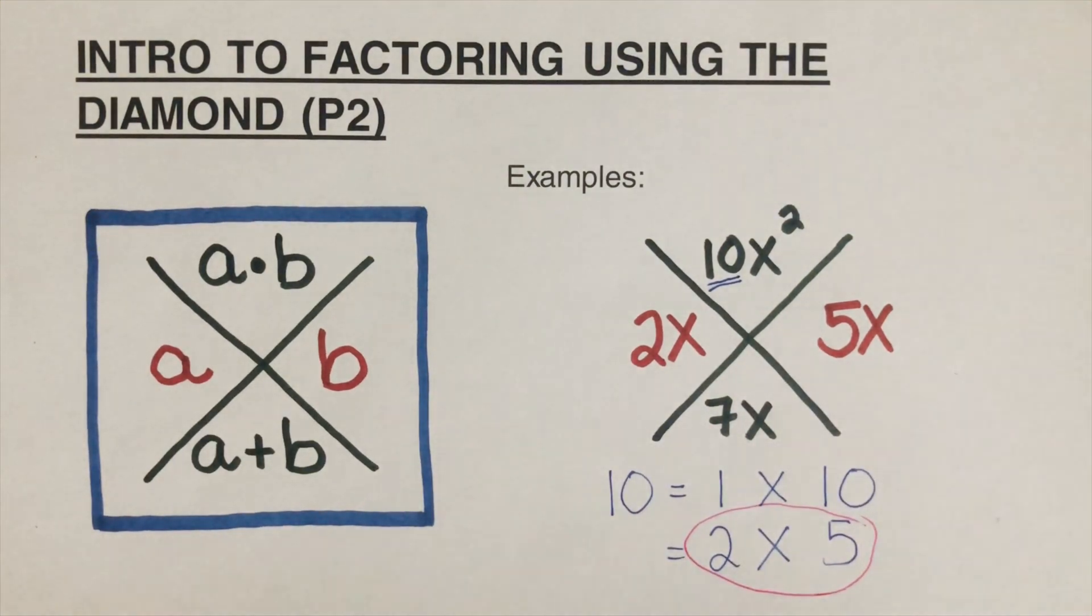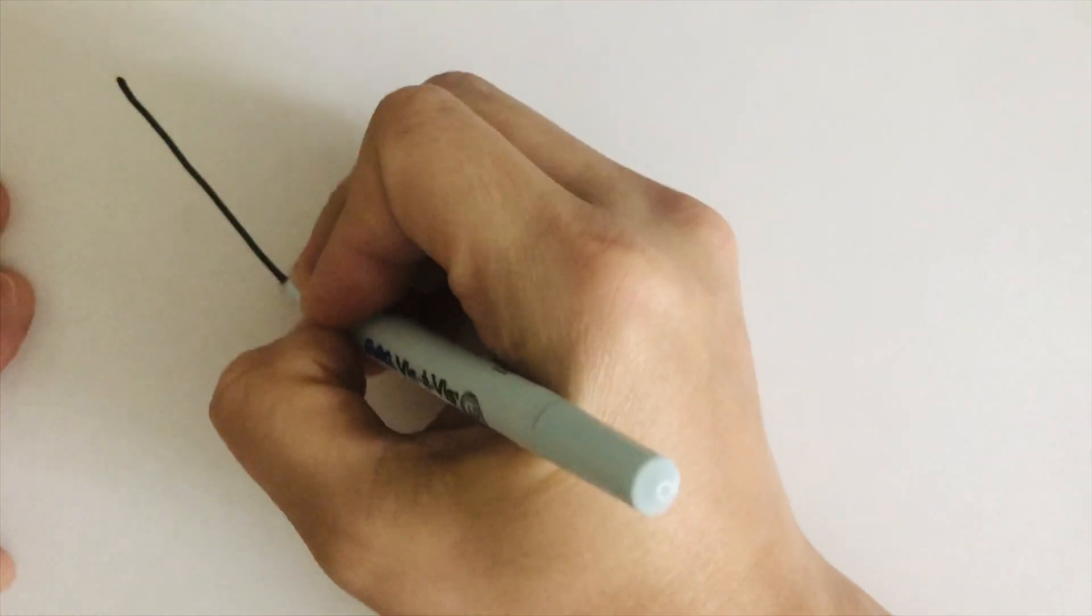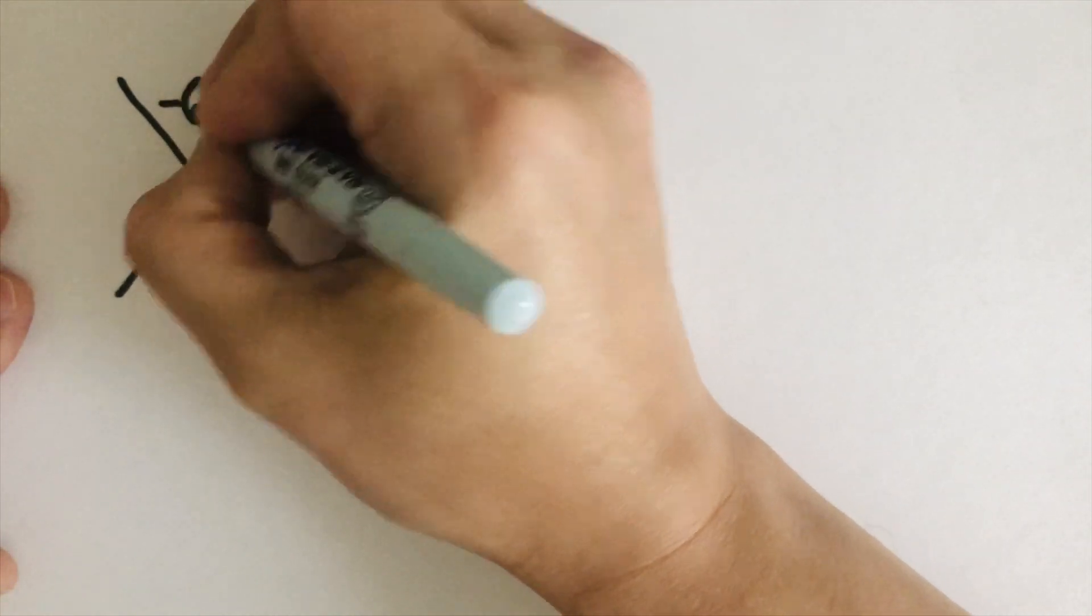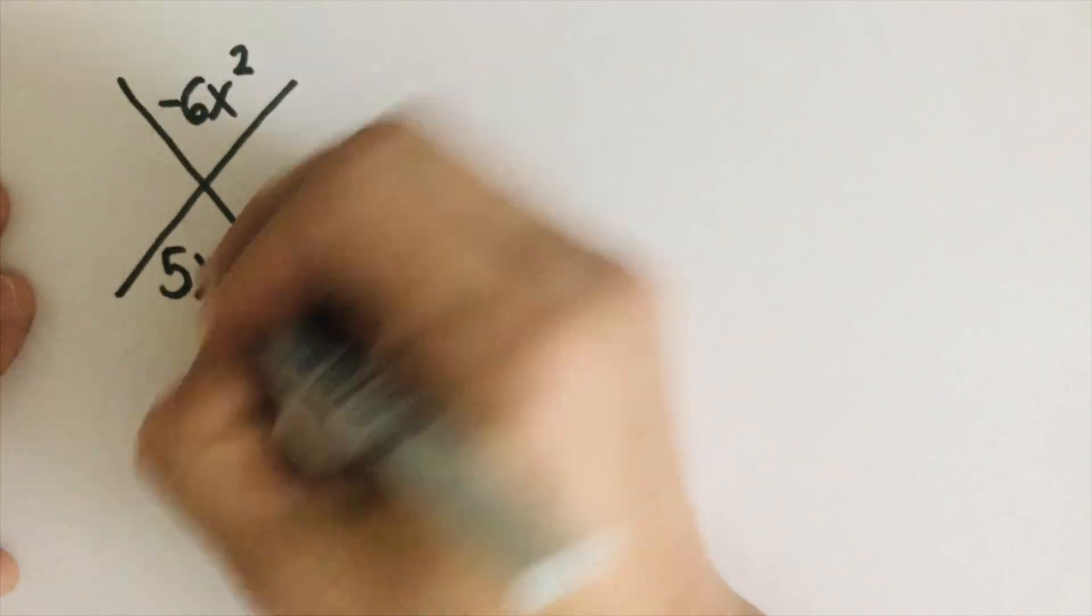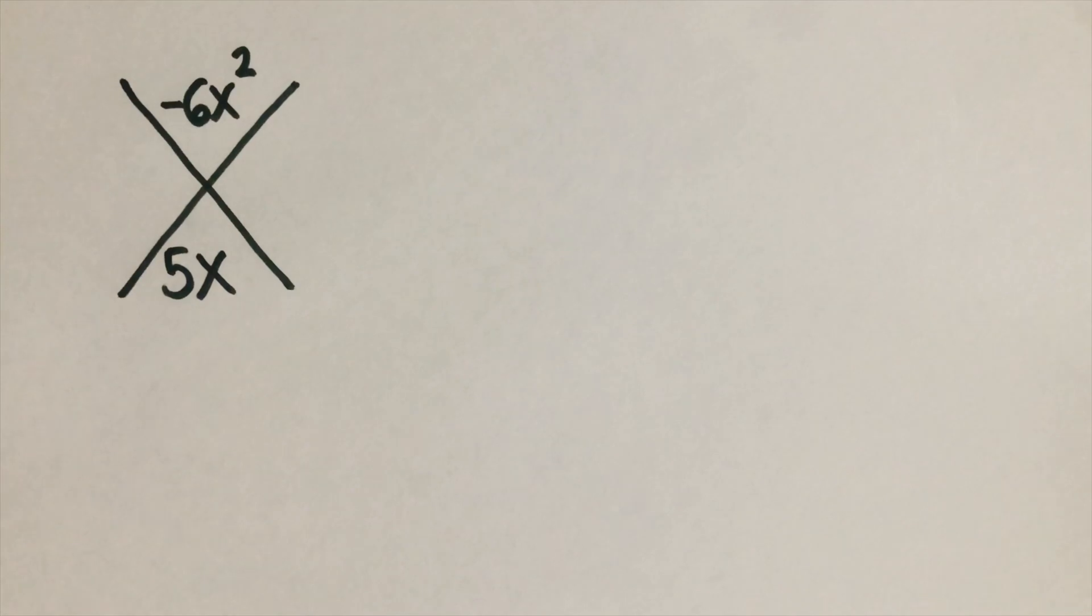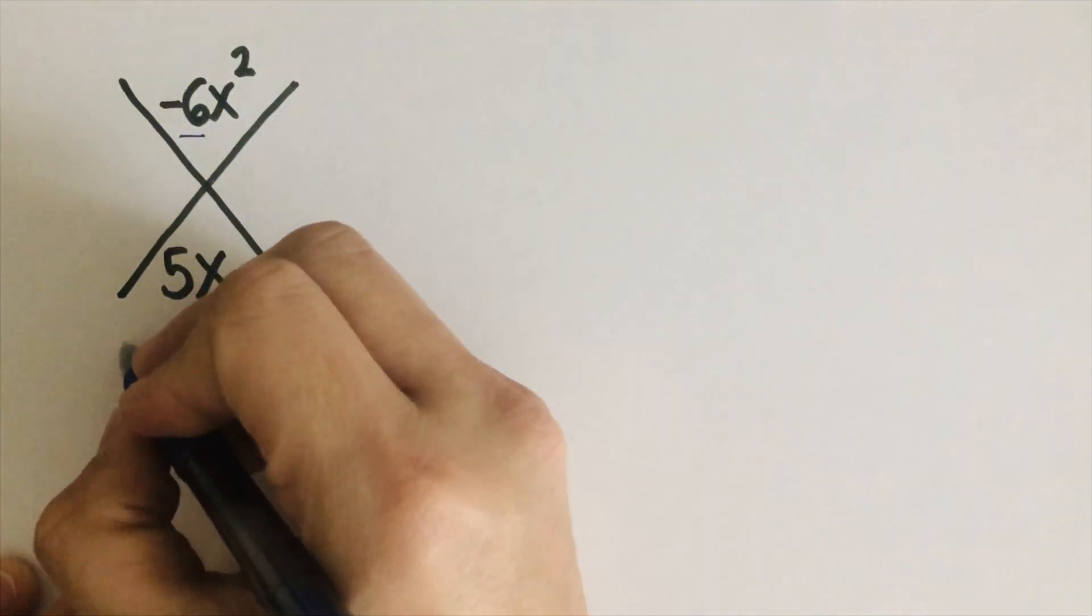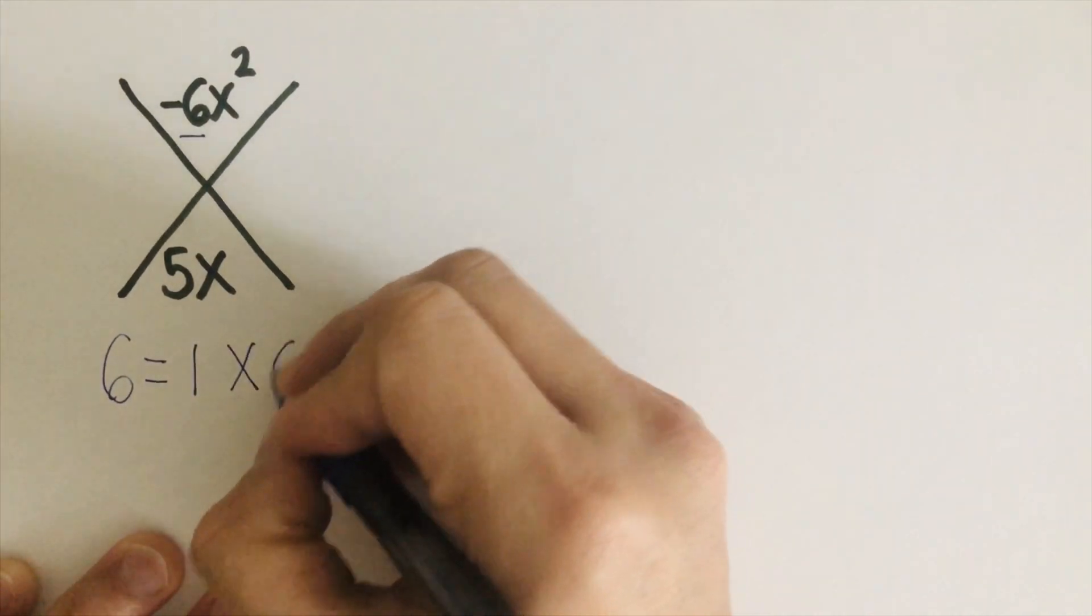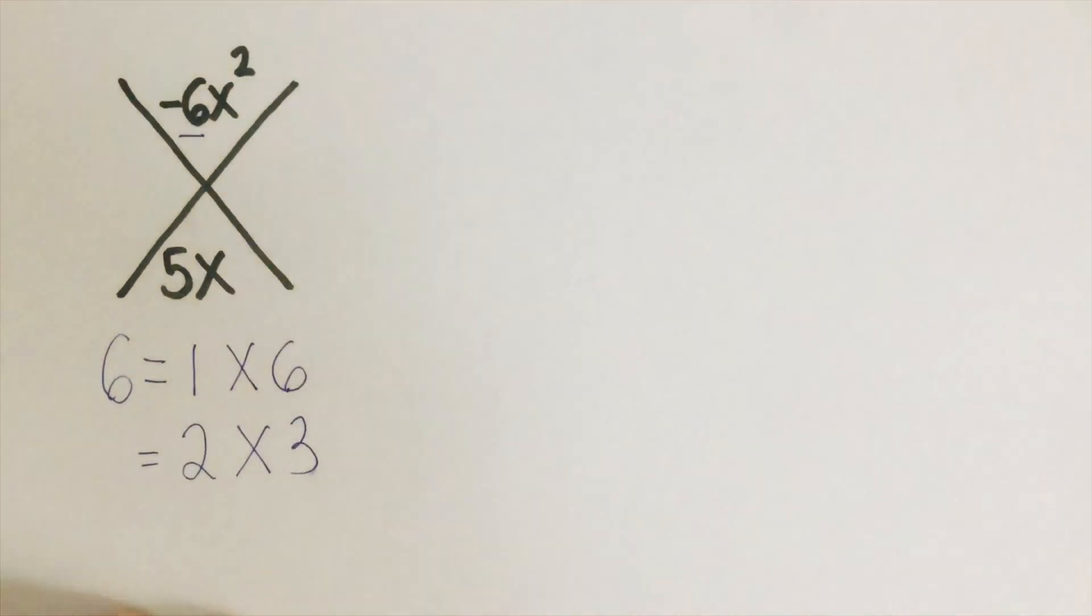Now let's have another example right here. Suppose I have here on top of the diamond negative 6x squared and this is 5x. So let's figure out the factors. Again, first thing that we need to do is find the factors of 6. So the factors of 6 would be 1 times 6 or 2 times 3. So these are the two factors.